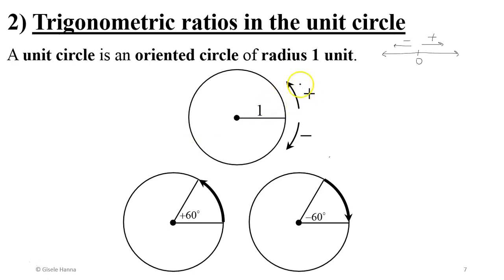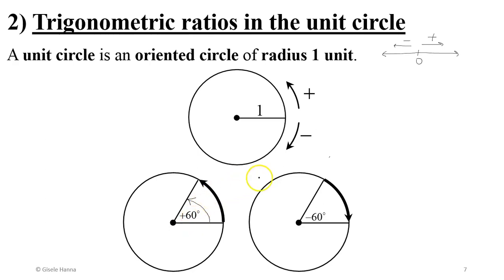By convention, the positive sense is counterclockwise — it goes against the clock — while the negative sense is clockwise. So if you look at these two circles at the bottom, both angles have a measure of 60 degrees, but in an oriented circle we must specify direction: opening in the positive sense gives +60 degrees, and opening in the negative sense gives -60 degrees.